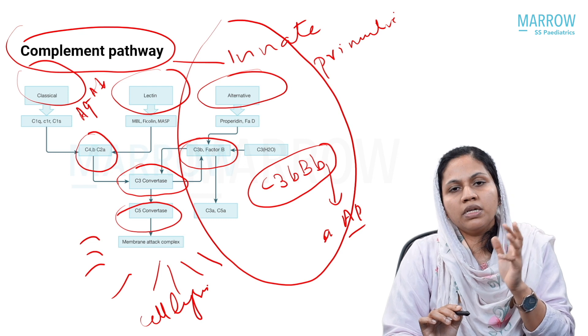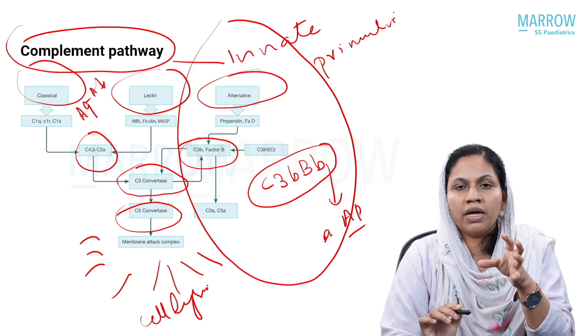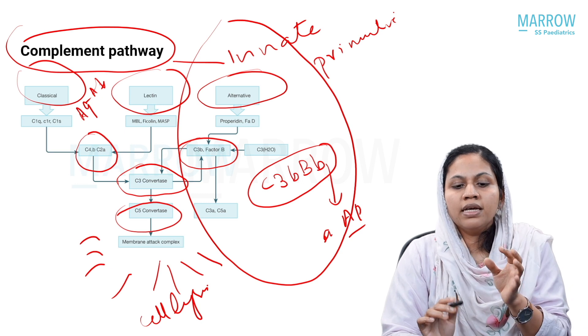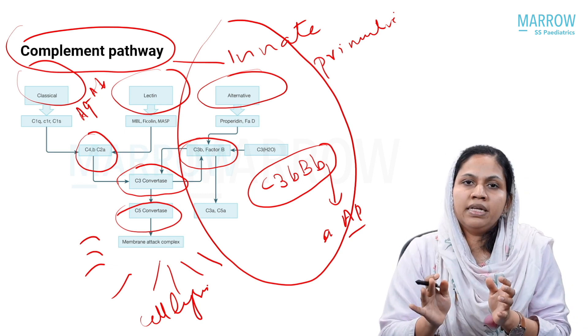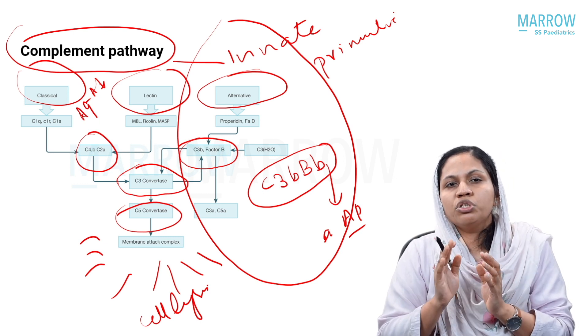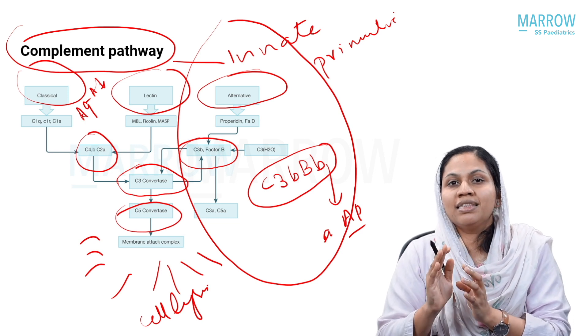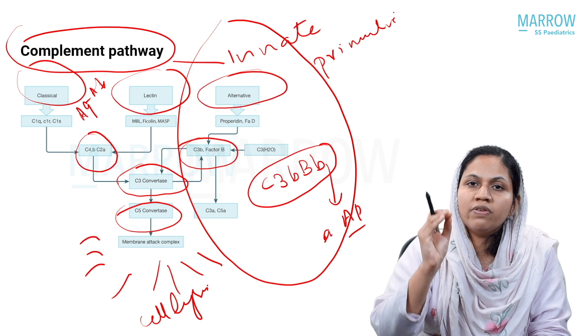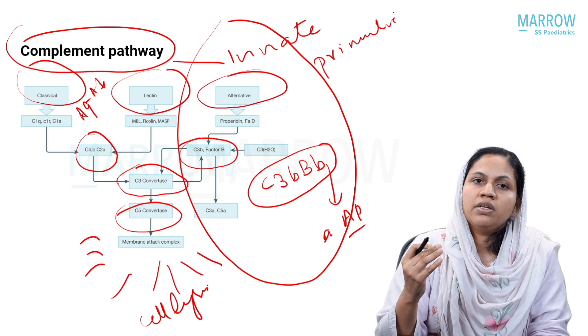As we already saw, the classical pathway is activated by antigen-antibody complexes, lectin pathway by microbial products. The alternative pathway is inherently active. It's like a policeman or watchman which is just constitutively watching the immune system of the organism to see any threats. So this is a constitutively active pathway.